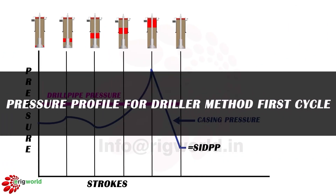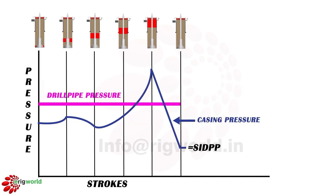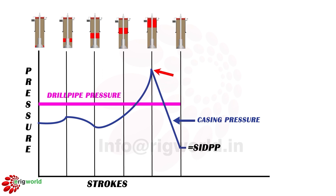Pressure profile for driller method first cycle: throughout the first cycle we keep drill pipe pressure equal to ICP at 800 psi (single fluid column constant). Casing pressure first increases due to influx expansion; when influx passes the BHA, casing pressure decreases due to reduction in influx height. As influx is circulated up the annulus, casing pressure keeps increasing due to influx expansion; when influx is at surface, casing pressure is at maximum. As influx moves out of the annulus, casing pressure reduces and becomes equal to SIDPP. When the pump is stopped and the well is shut in, both drill pipe pressure and casing pressure become equal to the original SIDPP because hydrostatic pressure on both sides is equal.